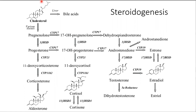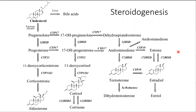Ultimately, all steroids are derived from a cholesterol molecule. And given the expression of different genes for all of these different enzymes, we ultimately end up with the mineralocorticoids — aldosterone is strongest in humans — the glucocorticoids, cortisol being the strongest in humans, as well as the sex steroids, testosterone and estradiol, as well as some other variations of these steroid hormones.